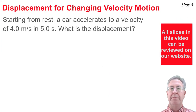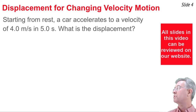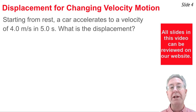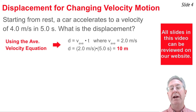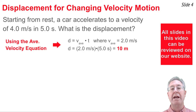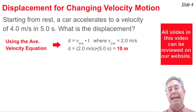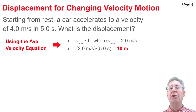Now let's try a second problem involving accelerated motion: starting from rest, a car accelerates to a velocity of 4.0 meters per second over 5 seconds — what is the displacement? Using the average velocity equation, displacement equals average velocity times time. For a car starting at rest and finishing at 4 m/s, the average velocity is 2 m/s. Multiplying 2 by 5 seconds gives a displacement of 10 meters.